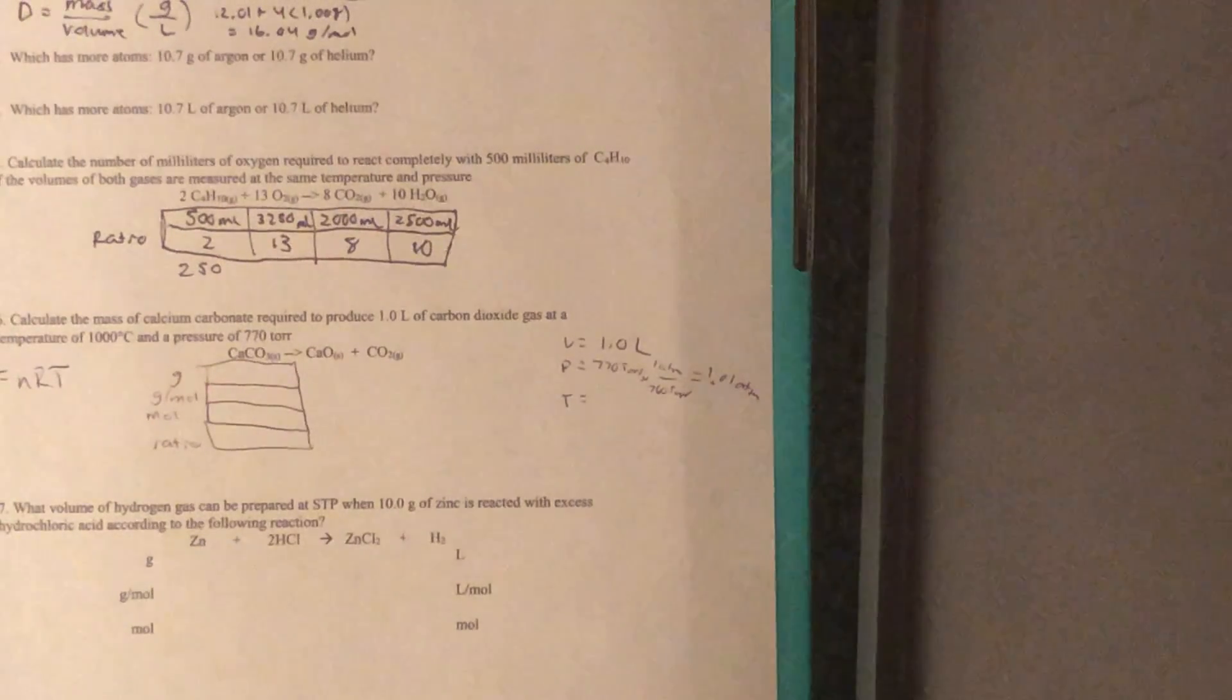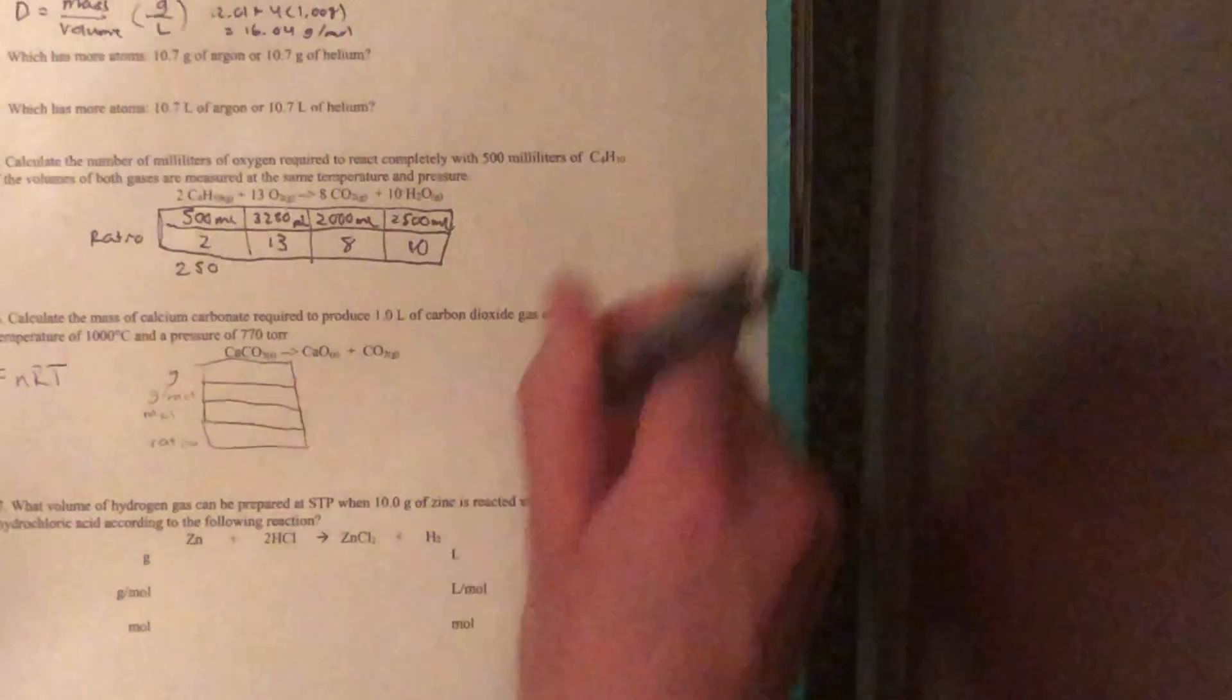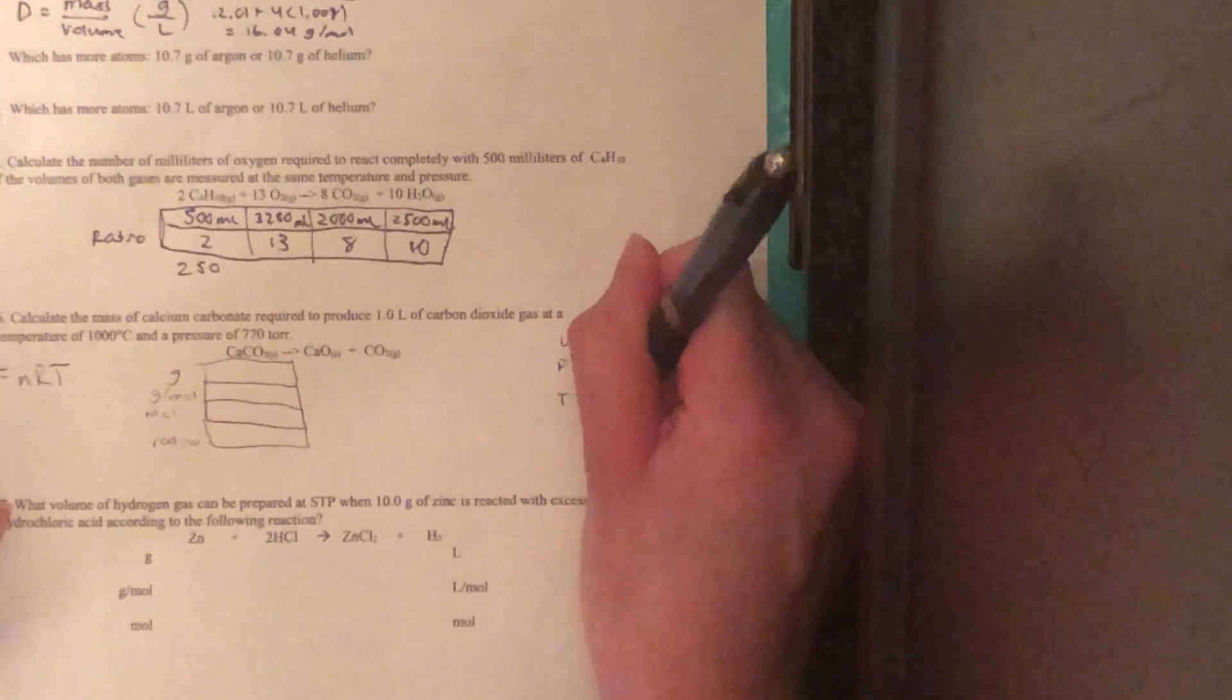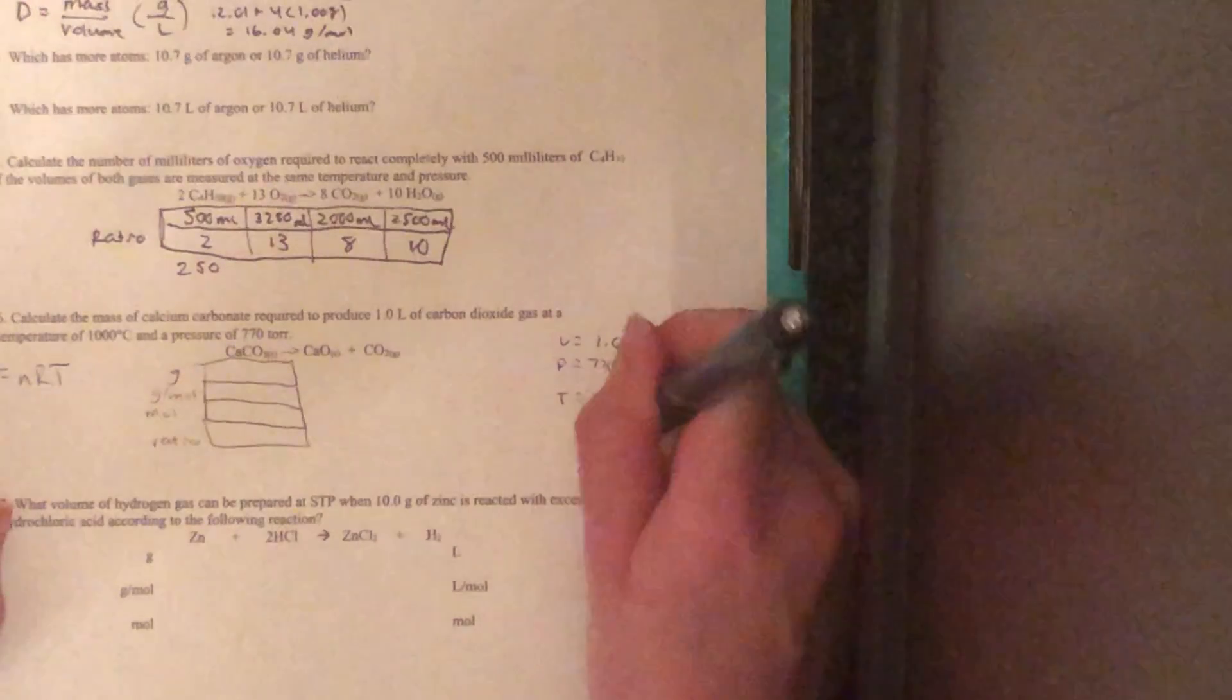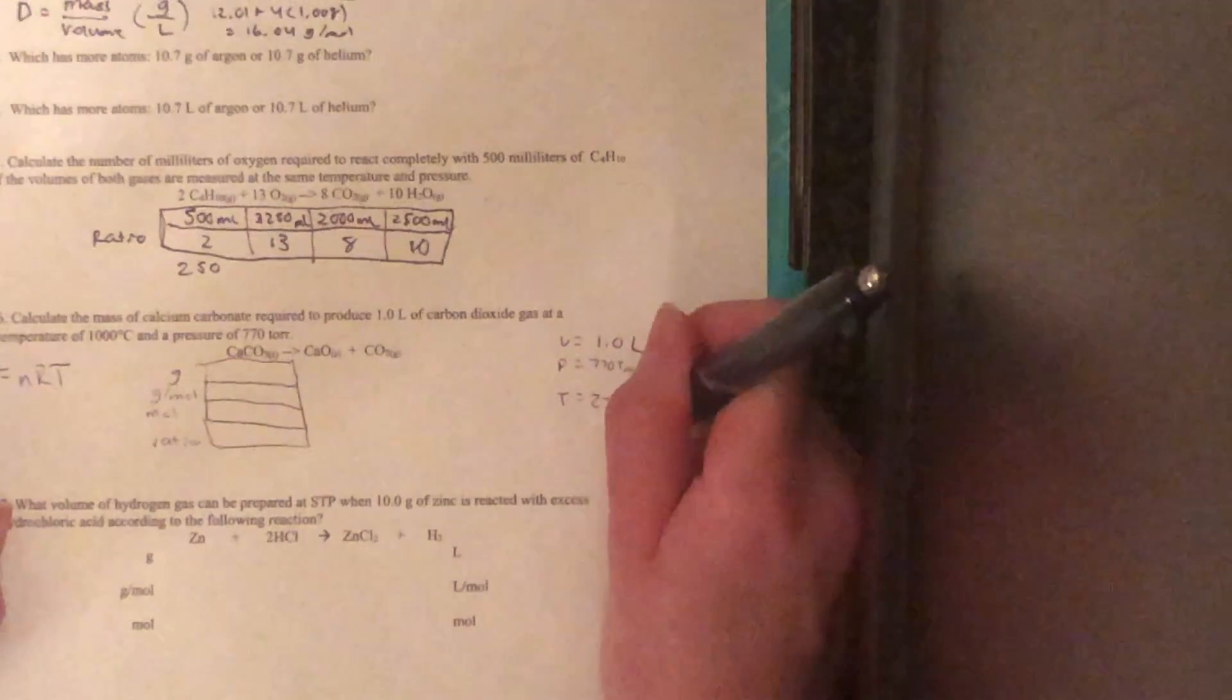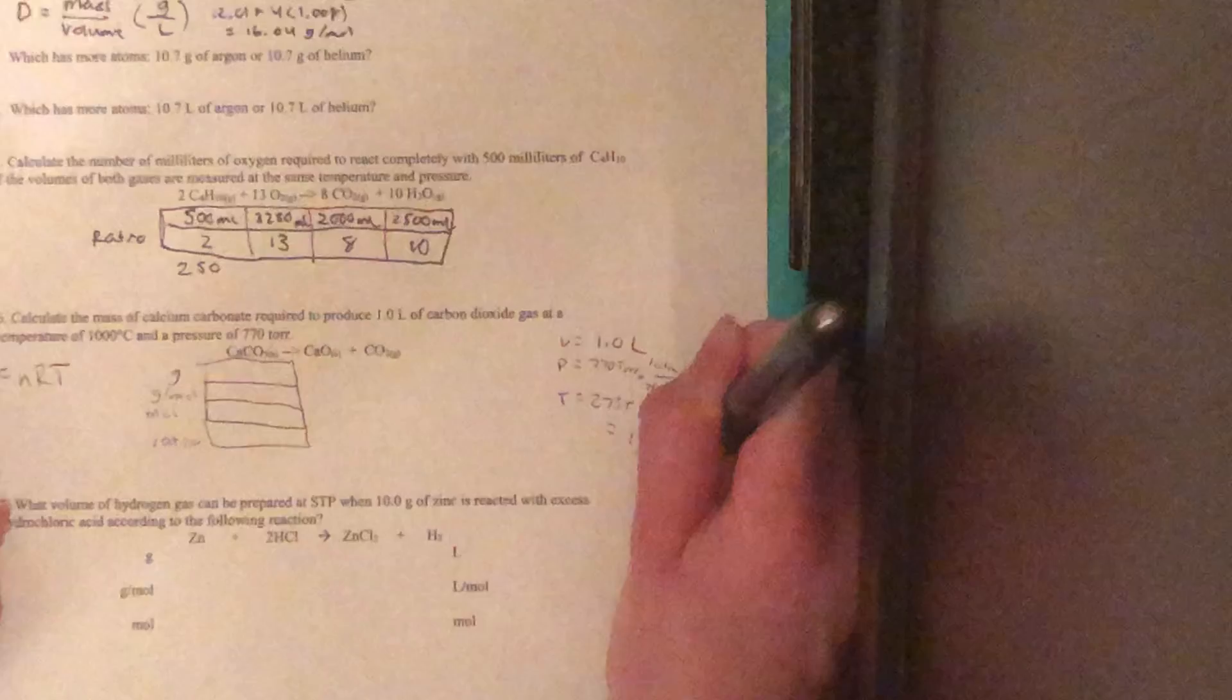Our temperature was given in Celsius, but we're going to need to convert that to Kelvin. So we will do 273 plus our Celsius, which is 1,000, and that gives us 1,273 Kelvin.